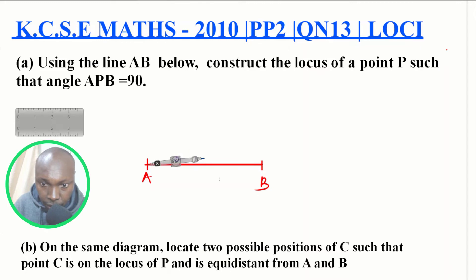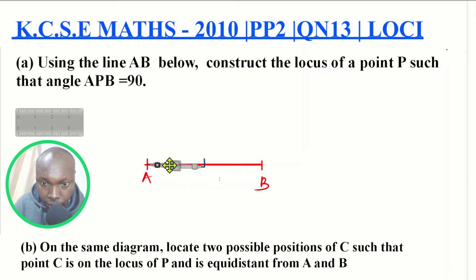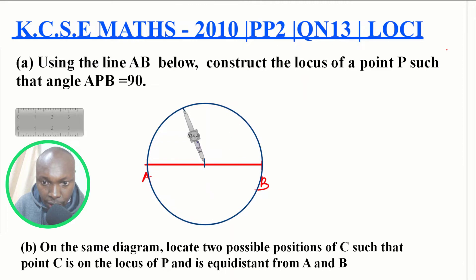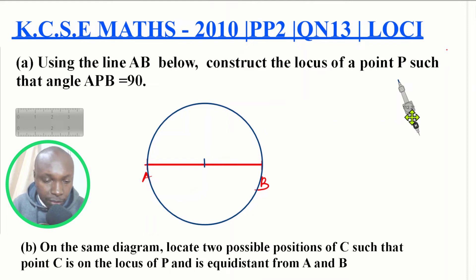I want to get the radius of this circle. This line is 6.8, so the radius will be 3.4. I will mark the center of the circle, then stand at the center with that radius and construct the circle. Any point on that circumference now represents the locus of point P — that is, any angle APB formed on the circumference will be 90 degrees. That is the first part done.